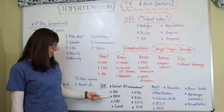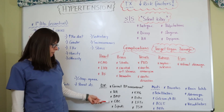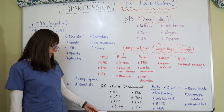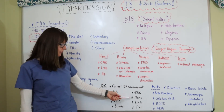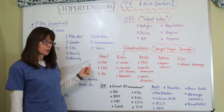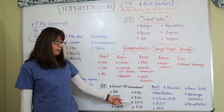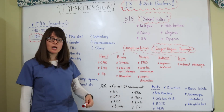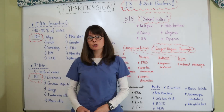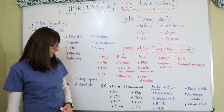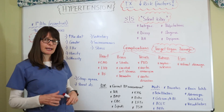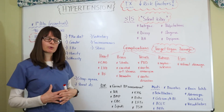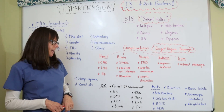Other diagnostic tests include urinalysis and a BMP to check kidney function and electrolytes, a CBC to check for anemia and platelet function, a lipid panel because of the high risk for hyperlipidemia, and an EKG or echocardiogram to check for heart complications. Liver function tests can identify liver issues that may be secondary causes of hypertension, such as cirrhosis. A thyroid panel is also important because the thyroid gland regulates metabolic rate and if not working properly can lead to hypertension.